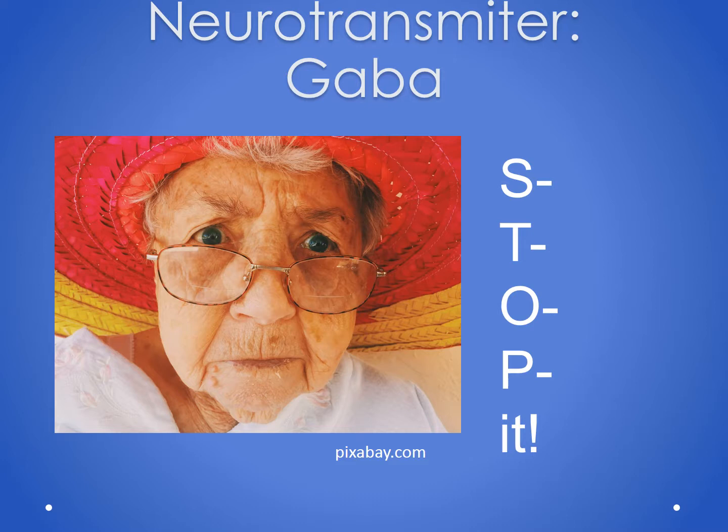One of the common brain chemicals or neurotransmitters that we work with in medications is gamma-aminobutyric acid, and for short this neurotransmitter is called GABA. I was taught that GABA is like your mama — she's an inhibitory transmitter, which means she quiets the nerves. She runs around and says, 'Shh, stop it, stop it, quiet, quiet, quiet.'